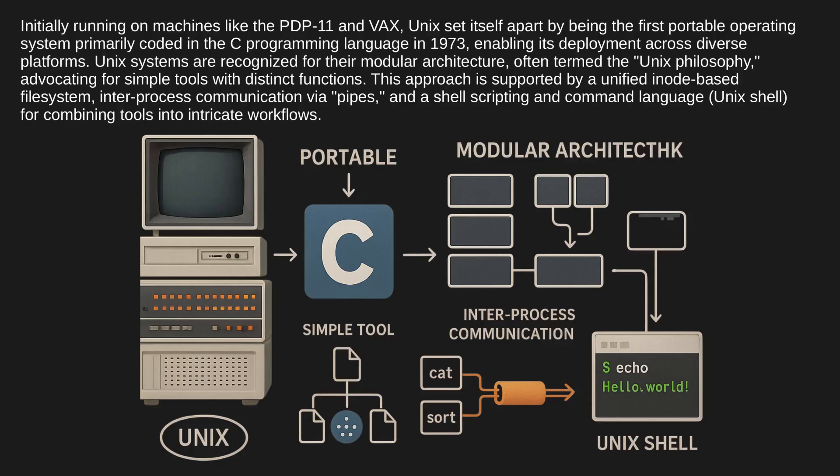Initially running on machines like the PDP-11 and VAX, Unix set itself apart by being the first portable operating system primarily coded in the C programming language in 1973, enabling its deployment across diverse platforms. Unix systems are recognized for their modular architecture, often termed the Unix philosophy, advocating for simple tools with distinct functions.